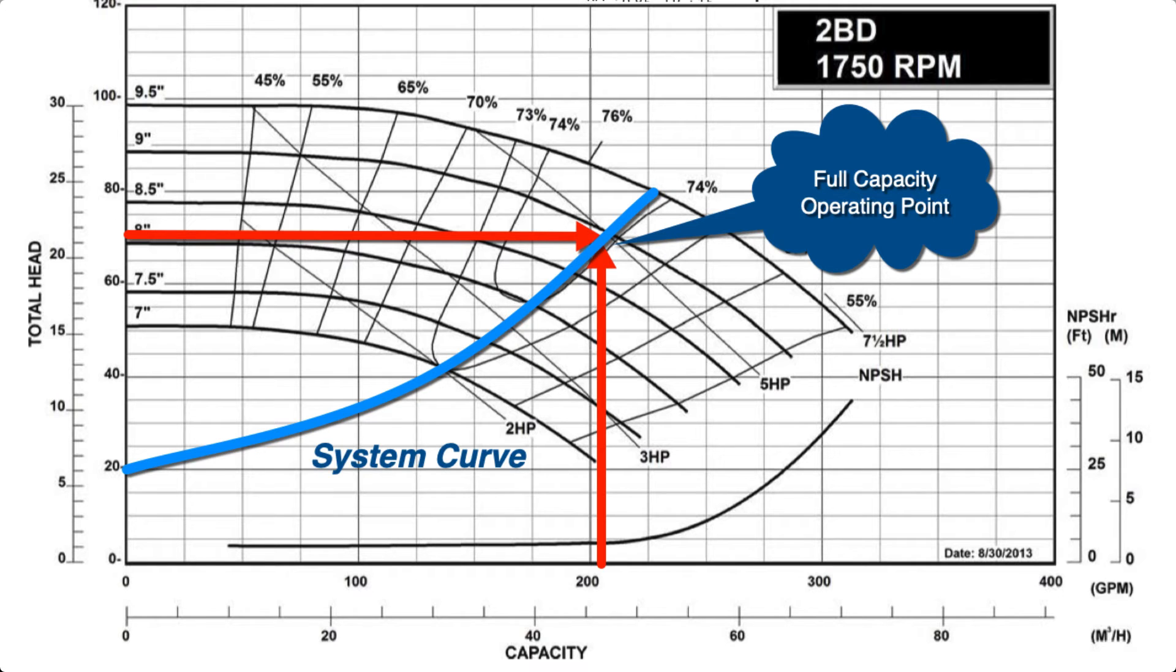The system curve must intersect the pump curve for proper operation of the pump. The engineer will design the pump for a flow rate, that's GPM, and a total head pressure based on the pressure losses of a fixed heating hot water, chilled water, or condensed water circuit. Any changes in flow will have a resulting change in pressure that follows this system curve.